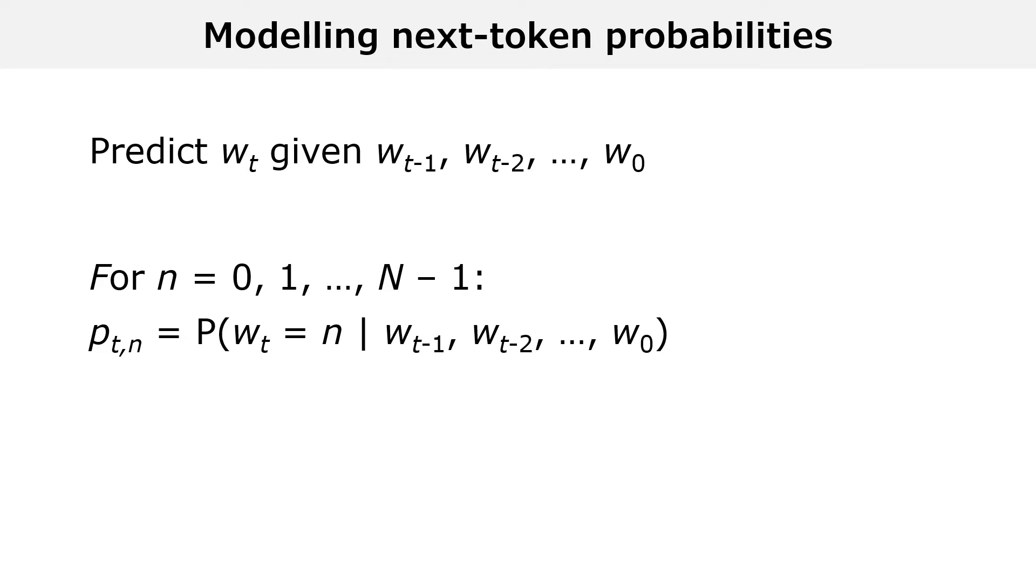We can now be precise about what it means to build a language model. A language model is a set of N functions f n that take as inputs the previous tokens and return as output N probabilities, one for each of the possible values of the next token. The N functions also take as an input a parameter vector, denoted by theta. The parameter vector is a set of values that we adjust to make the model a good one. The process of adjusting the parameters is called training.